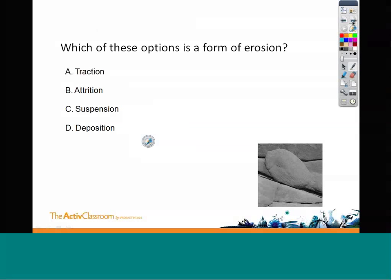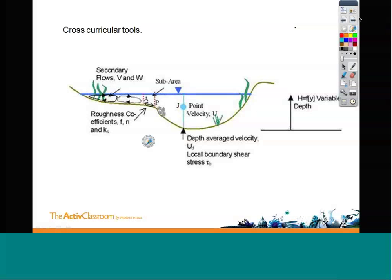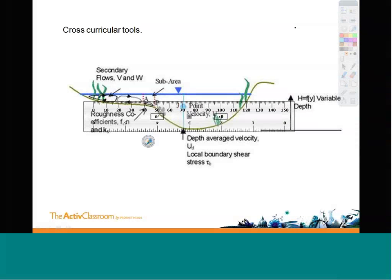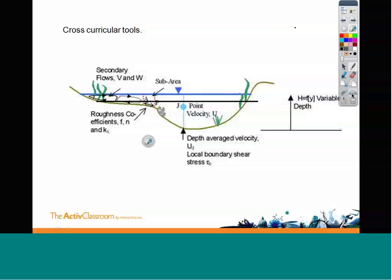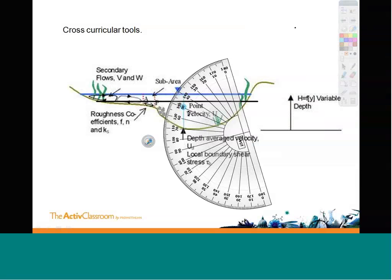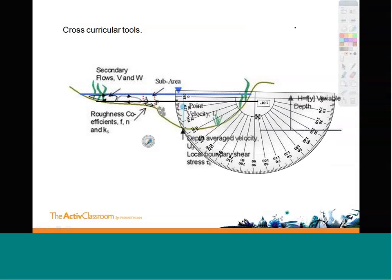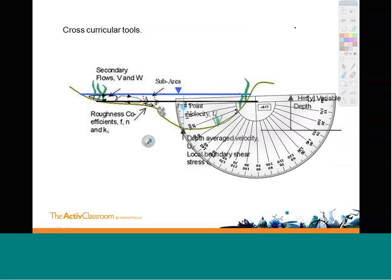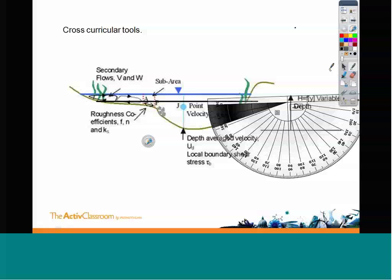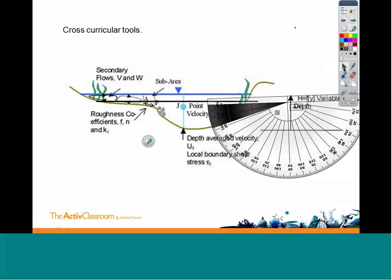In this next example, I need to use the Math functionality. As you can see, I'm now looking at a cross-section of a river. I can select a ruler to show the cross-section, and use the protractor to work out the angle of erosion at each side of the river. Using this information, I'll be able to investigate the river flow at varying points and help students understand how erosion does not happen evenly at each side of the river bed.